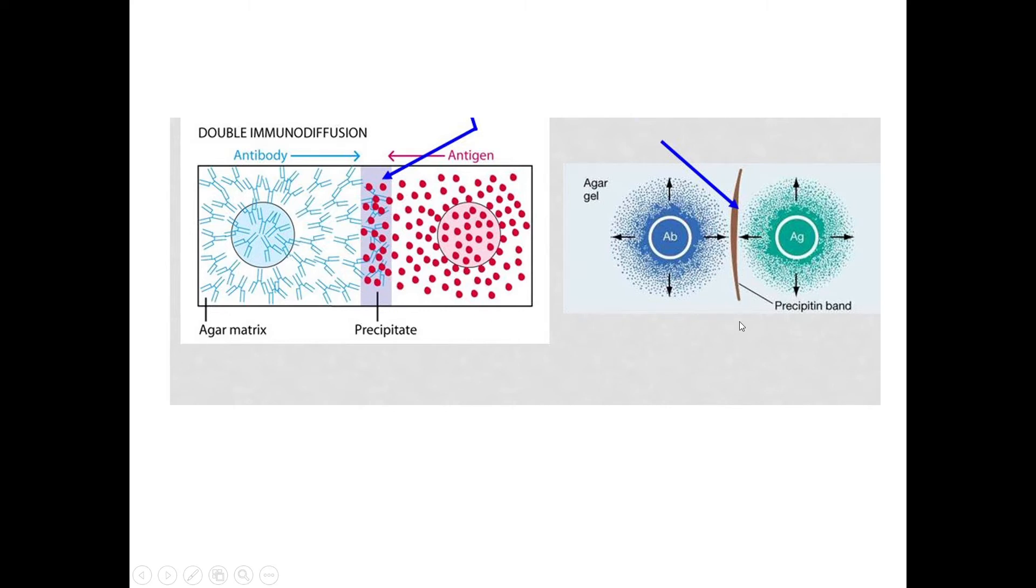That is shown in the picture. You can see with the help of arrow marks the formation of the precipitin line or precipitin band. Next, we will move on to the materials required for the practical.